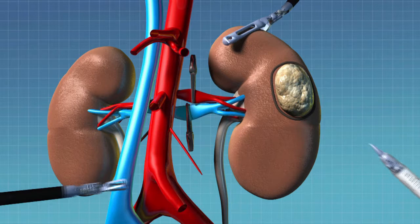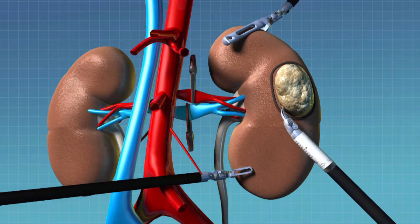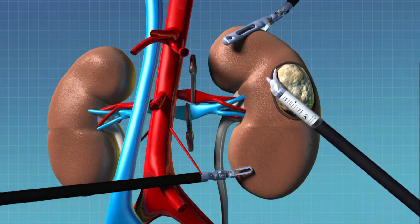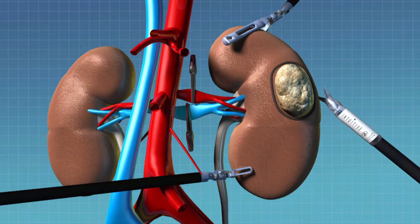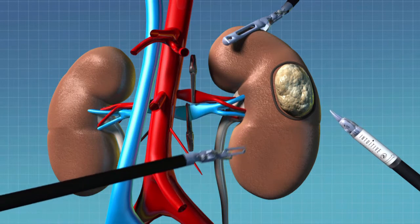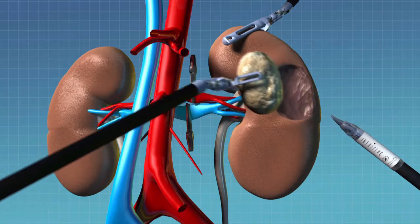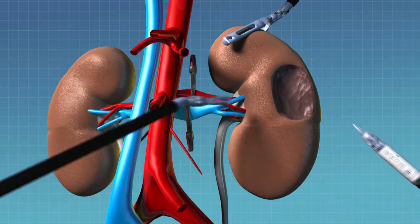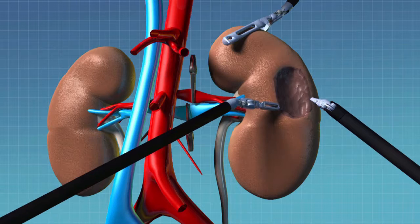Now, not every patient is a candidate for partial nephrectomy or for robotic partial nephrectomy. The ideal candidate has a tumor which is still relatively small and which is not located in the middle of the kidney. That allows us to reconstruct the kidney in a way that preserves good kidney function and which is safe for the patient.